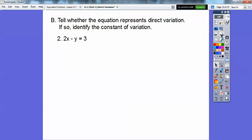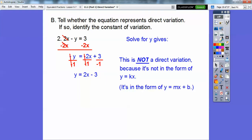How about this one? 2x minus y equals 3. So solving for y, we subtract the 2x, and we get negative y equals negative 2x plus 3. Then divide both sides by negative 1, because we have to solve for y, not negative y. So that just changes the signs, changes this negative 2x to a positive 2x, and then to a minus 3. That has a plus b on there, so that is not a direct variation, because it's not in the form of y equals kx. It's in the form of y equals mx plus b.